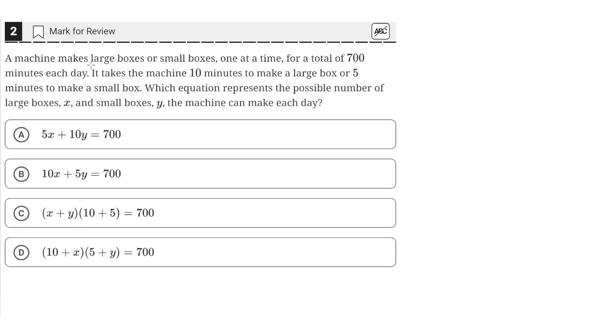A machine makes large boxes or small boxes, one at a time, for a total of 700 minutes each day. It takes the machine 10 minutes to make a large box, or 5 minutes to make a small box. Which equation represents the possible number of large boxes x and small boxes y the machine can make each day?